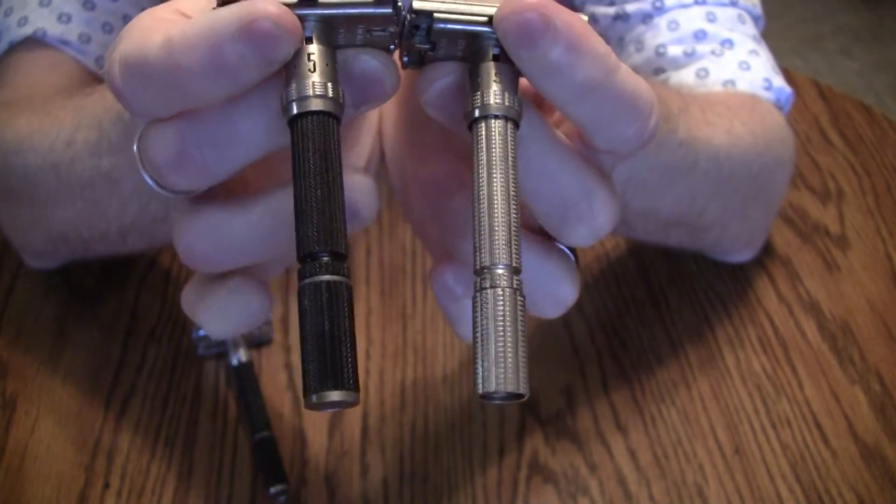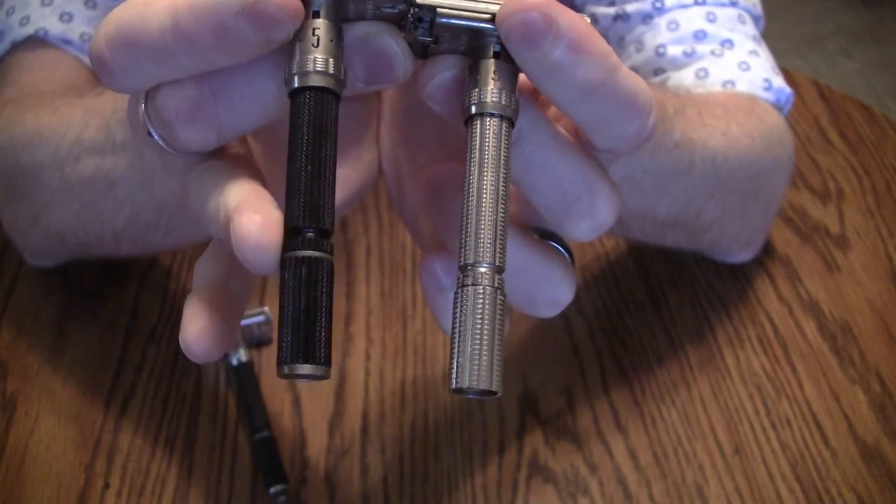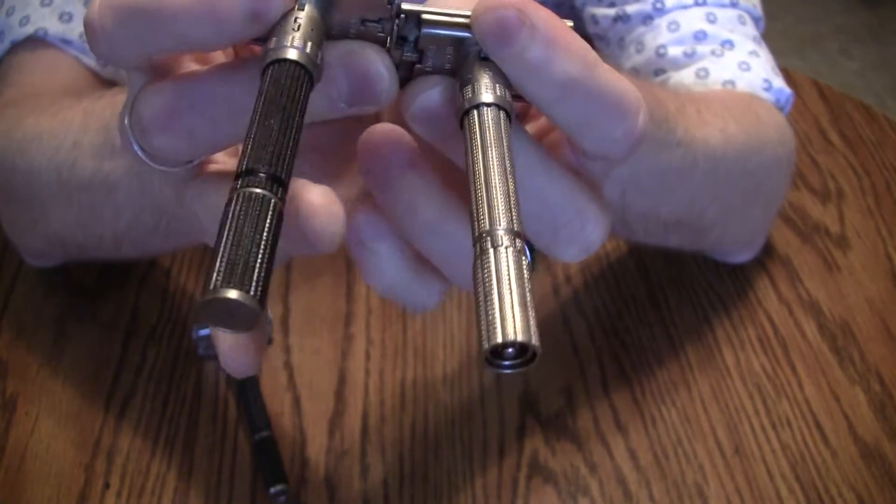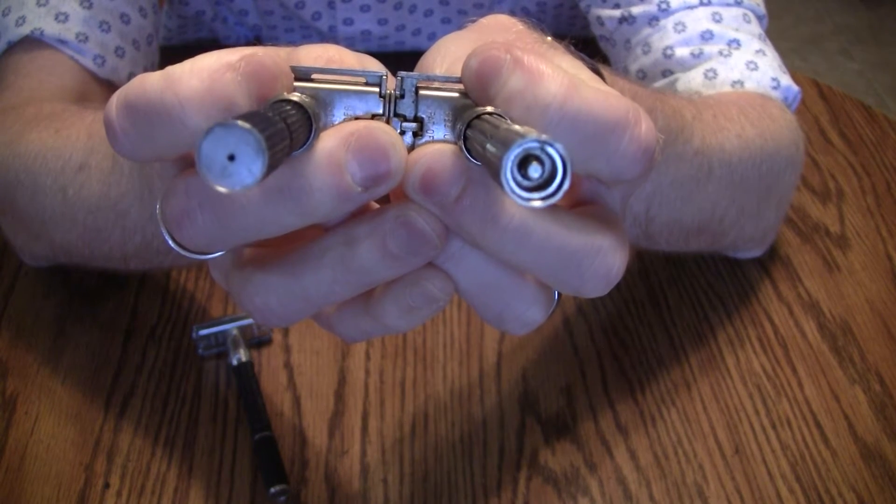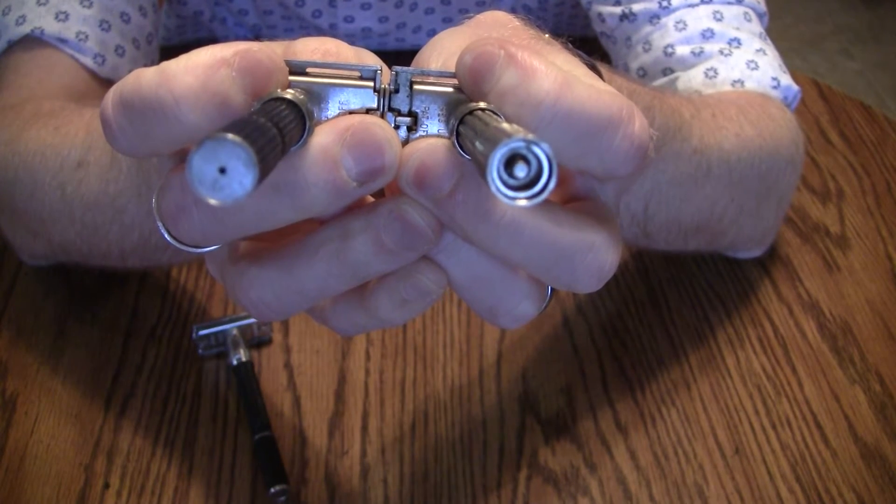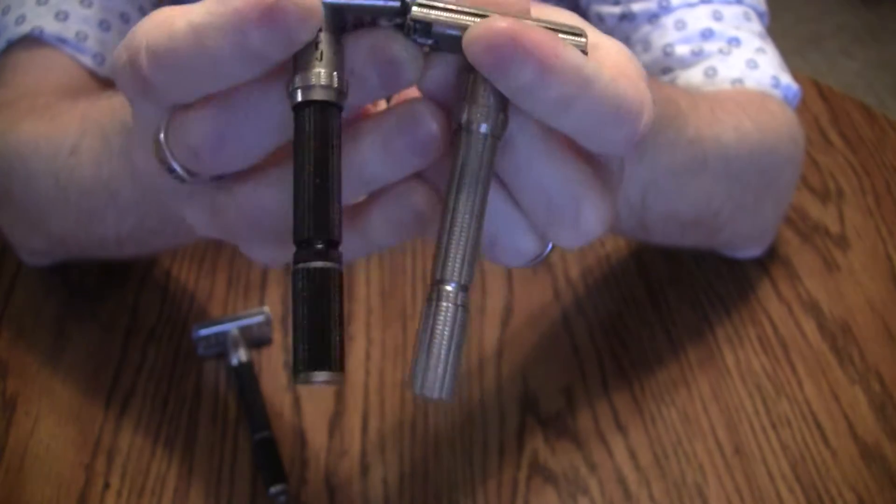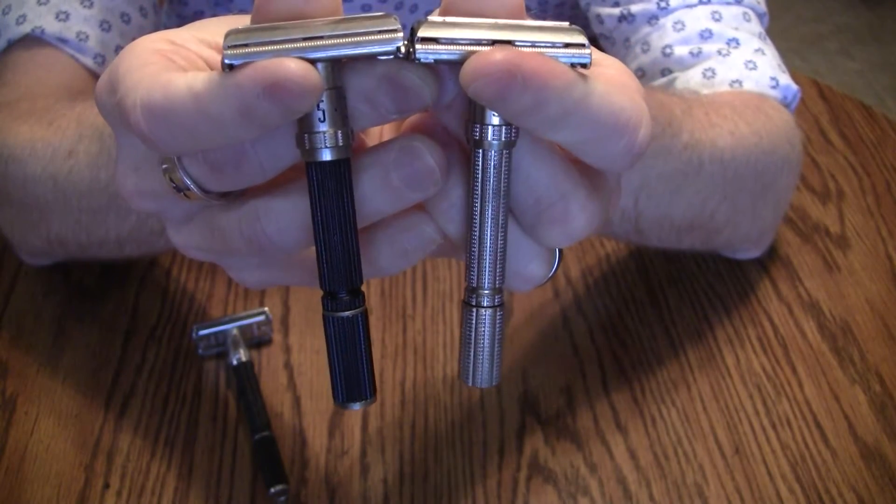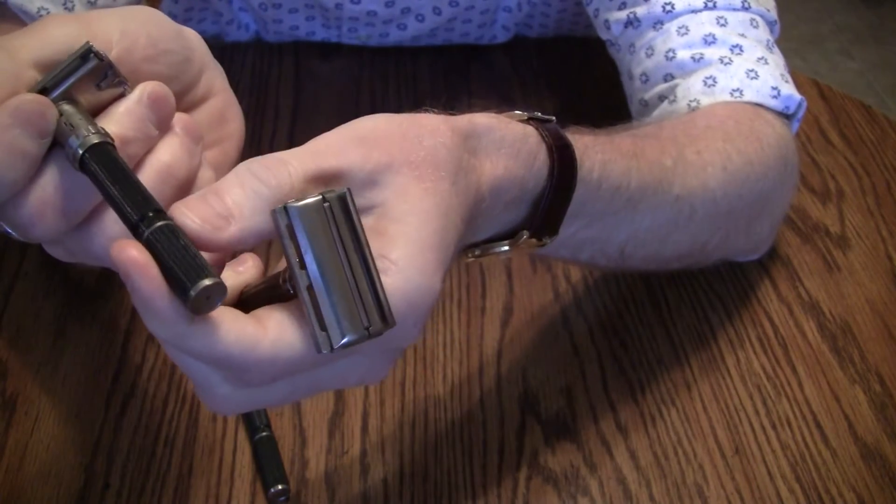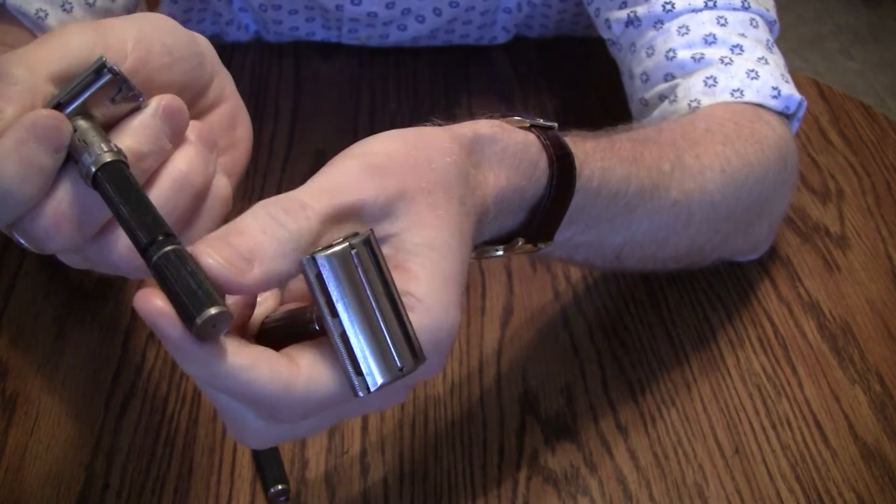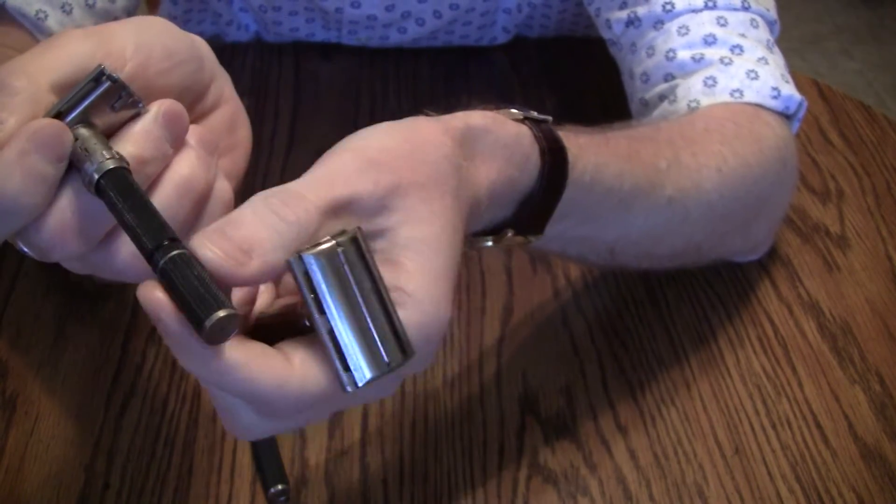But that's not the only thing that's different. You'll also notice, if you look at the TTO knob, there is a metal band around here. And then there is an end cap. All right. The metal band and the end cap are attached to the TTO knob here. And it just gives it sort of a finished look.